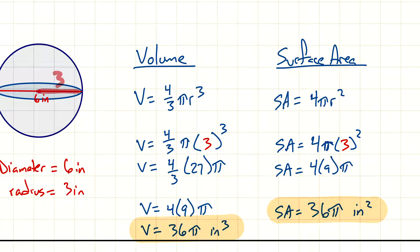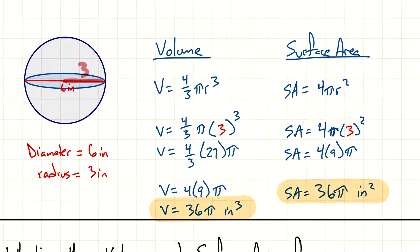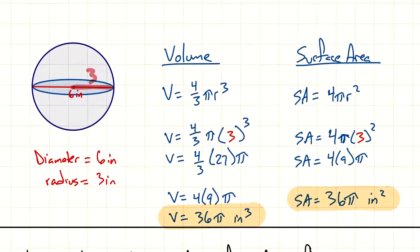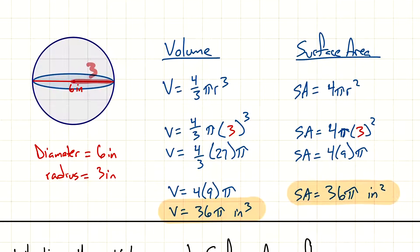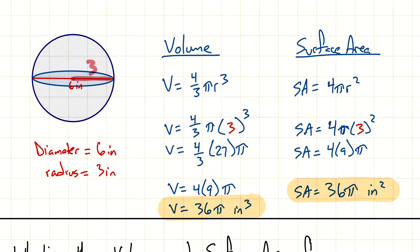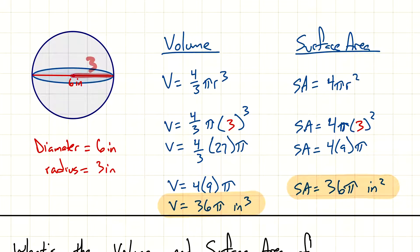It's like saying do you have 36 giraffes or 36 elephants — the number might be the same but they're definitely different in size. Make sure you have the correct units when you write out your volume and surface area.